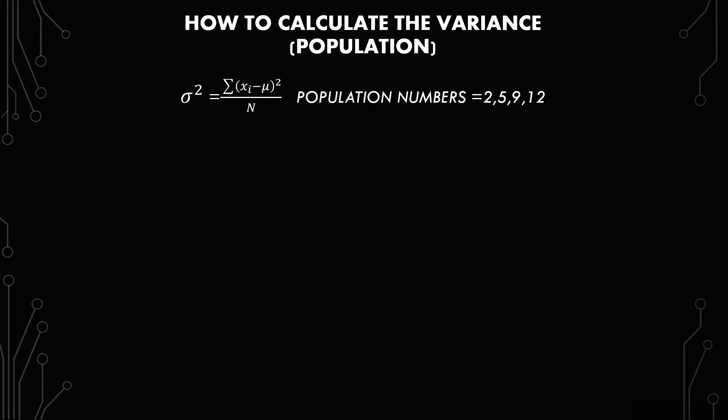Basically, is it an n or is it an n minus 1 that you're dividing by? So in this case, you have sigma squared. Sigma represents standard deviation, sigma squared represents variance.